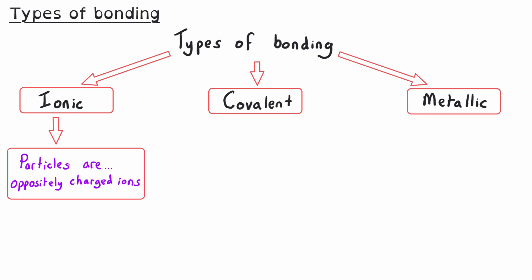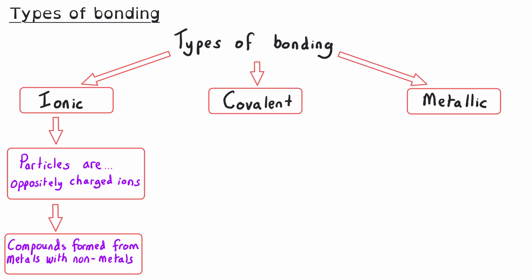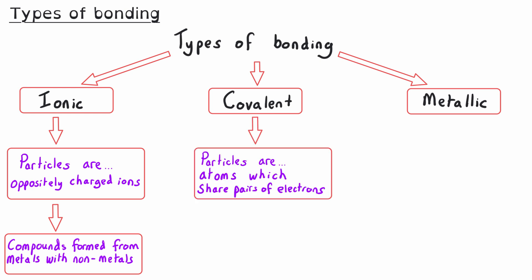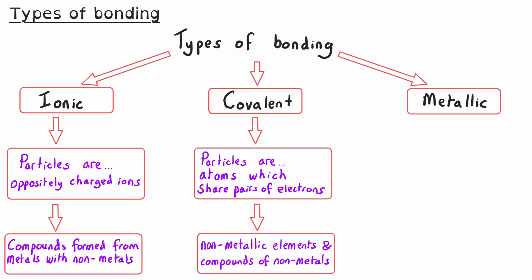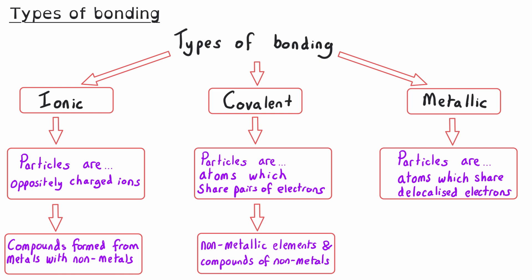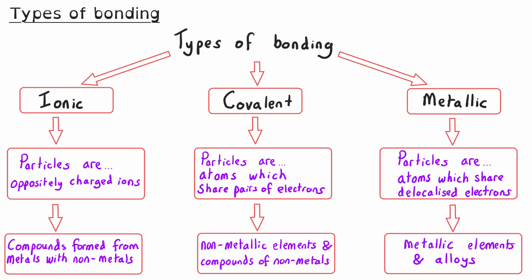For ionic bonding, the particles are oppositely charged ions and it occurs in compounds formed when metals are combined with non-metals. For covalent bonding, the particles are atoms sharing pairs of electrons and it occurs in most non-metallic elements and in compounds made of non-metals. In metallic bonding, the particles are atoms which share delocalized electrons and this type of bonding occurs in metallic elements and in alloys. In this video, we will be focusing on covalent substances.